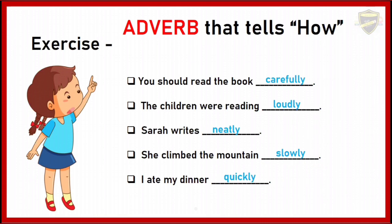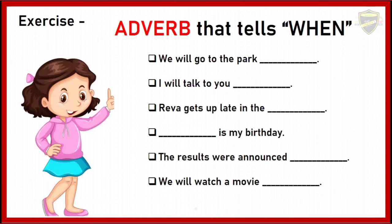Now let's see adverb that tells when. We will go to the park tomorrow. I will talk to you later. Riva gets up late in the morning. Today is my birthday. The results were announced yesterday. We will watch a movie tonight. Focus on words like tomorrow, later, morning, today, yesterday, and tonight — they tell us when an action happened or is going to happen.